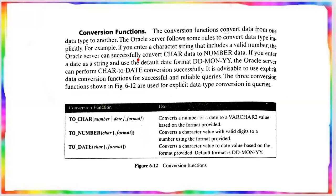The next type of function is the conversion function. It converts data from one data type to another. The Oracle server follows implicit rules — for example, if a character string contains a valid number, Oracle can convert it to number; if a date is entered as a string in the default format, Oracle can convert it to a date.